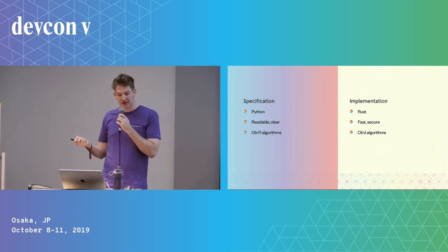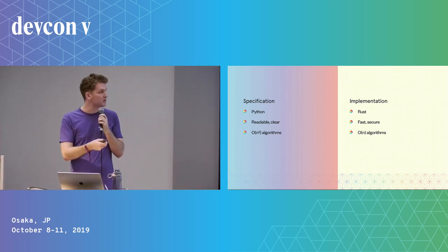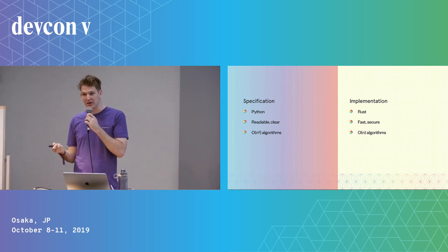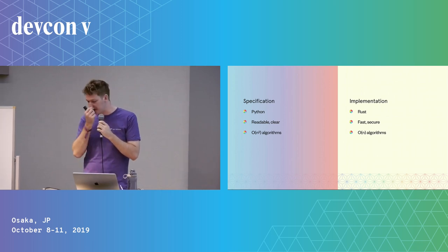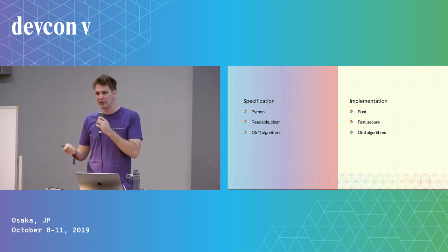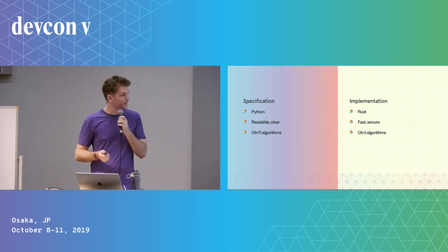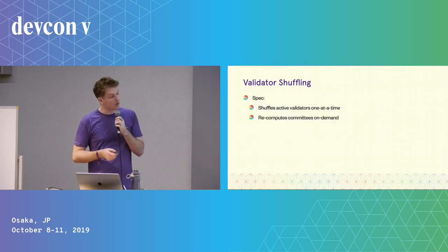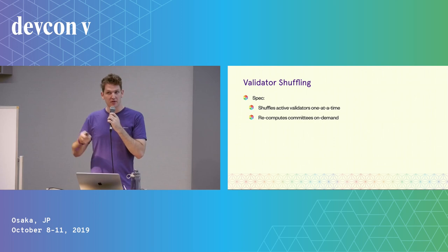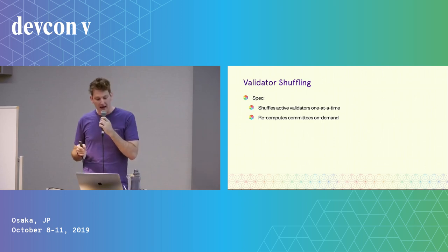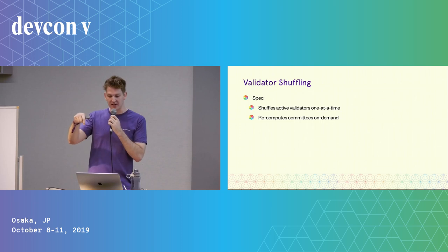Where the spec might prioritize readability and use some quadratic time algorithms, in Lighthouse and in most ETH2 clients you really want to make sure that you're running quickly and using linear time algorithms, particularly over the set of validators, which could be up to 4 million validators in a list. One example of where the spec is slightly inefficient is the shuffling of validators. We use this one-at-a-time swap-or-not shuffling in the spec, and for each index it computes which index it gets shuffled to, one at a time.